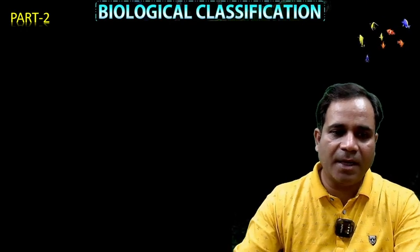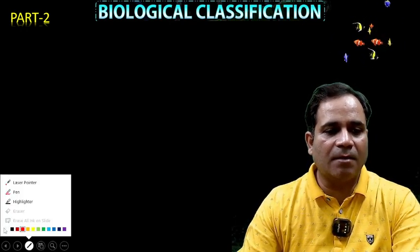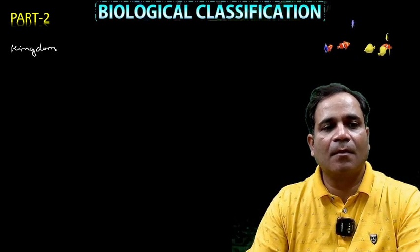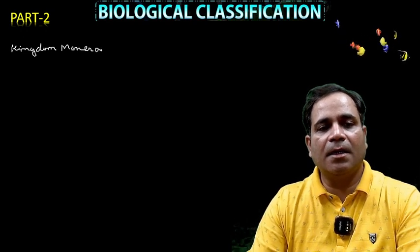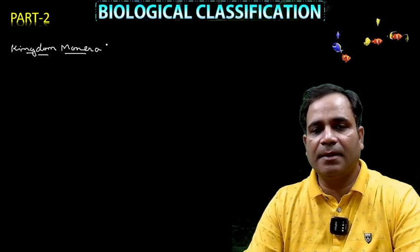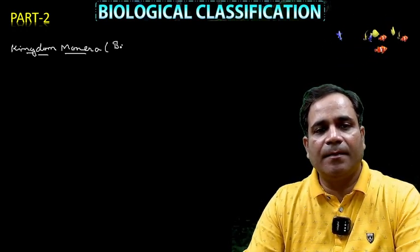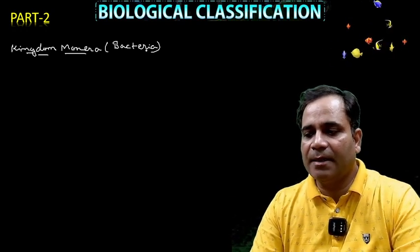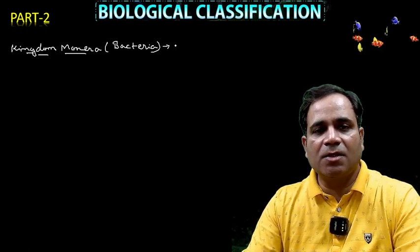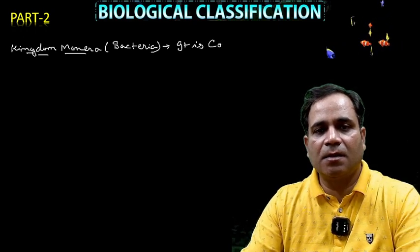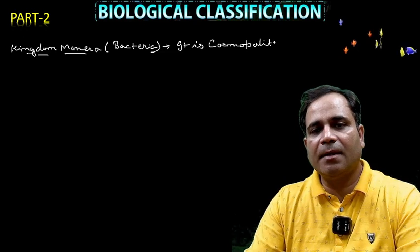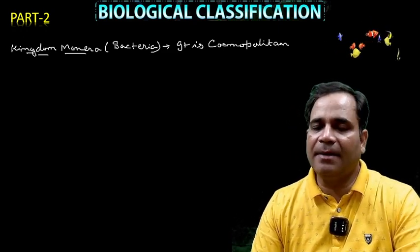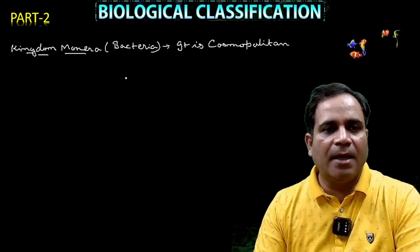Let me start with Kingdom Monera. In Kingdom Monera, the sole member is bacteria. Bacteria is cosmopolitan — meaning it is found everywhere, in each and every place. So the first point is that bacteria is the sole member of Kingdom Monera.